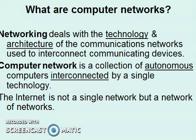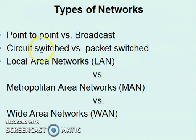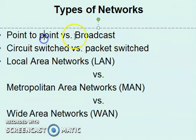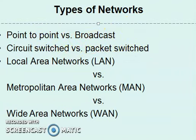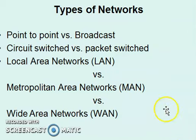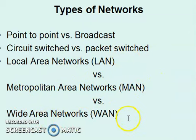Now let's look at the types of networks. Networks can be classified as point-to-point versus broadcast, and circuit-switched versus packet-switched. We also have local area networks, metropolitan area networks, and wide area networks — known as LAN, MAN, and WAN.